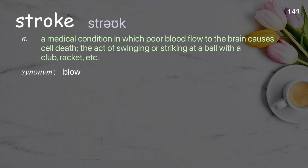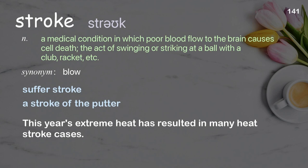Stroke: a medical condition in which poor blood flow to the brain causes cell death; also the act of swinging or striking at a ball with a club, racket, etc. Examples: suffer a stroke, a stroke of the putter. This year's extreme heat has resulted in many heat stroke cases.